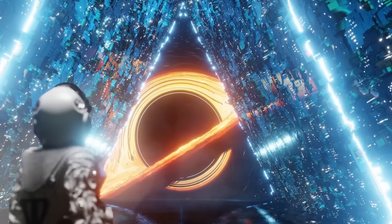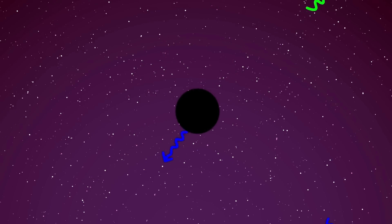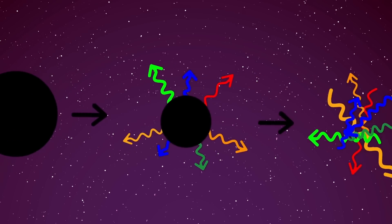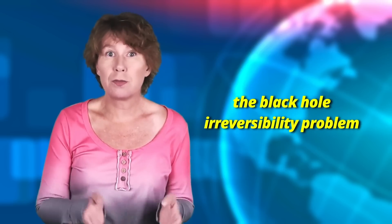The biggest problem with black hole information loss is that it's not about information. So please don't get hung up on the question of what information means — it's totally irrelevant. The issue is that Stephen Hawking found out that black holes can decay by emitting radiation, now called Hawking radiation. According to his calculation, this evaporation process is irreversible, which means you can't tell from the final state — just a bunch of radiation — what formed the black hole or what fell in later. There are many initial states that lead to the same final state. What physicists mean by 'information' here is just the details that describe the initial state which get lost. It'd better be called the black hole irreversibility problem.